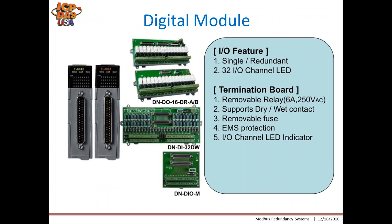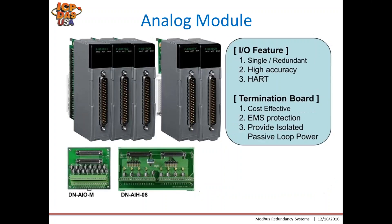The digital modules and all DCS modules have these features. We have both single and redundant communication settings — you can have either one module on the rack system or two when acting as redundancy for the first one. The LED statuses show the IO status, and the termination boards are removable, provide relay outputs, are EMS protected, and have individual LED indicators for each channel. The analog modules also offer single and redundant options, are high accuracy, and some have HART communication. The termination boards are cost effective and connected using a DB cable to the IO slot module.